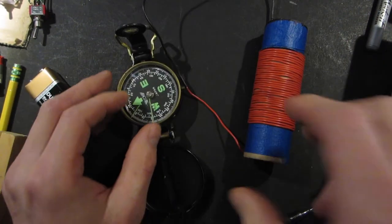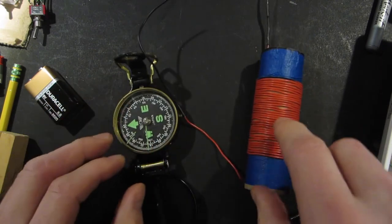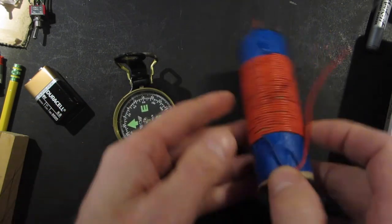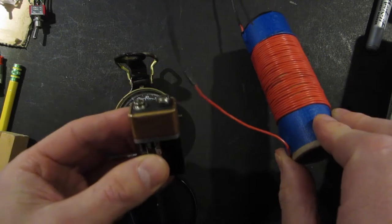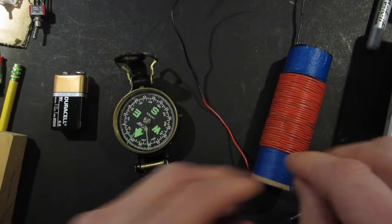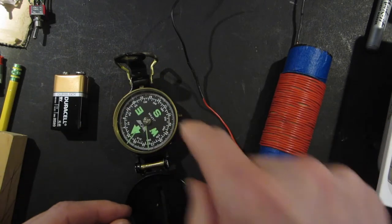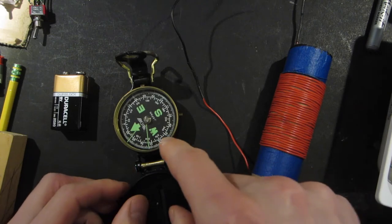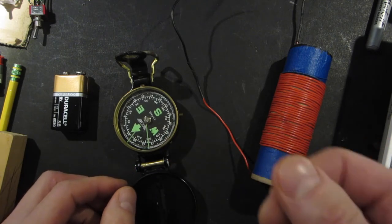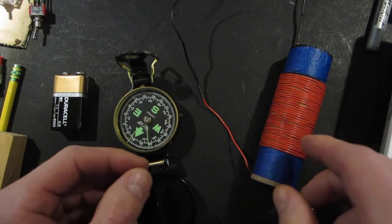But because this channel is all about circuits, what we're going to do is build a circuit that consists of a coil of wire and a battery. And what we're going to do is create a magnetic field that affects the compass needle. Just like using a real magnet, what this is is an electromagnet.